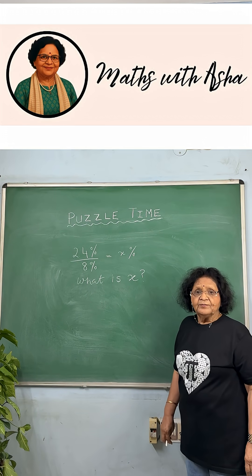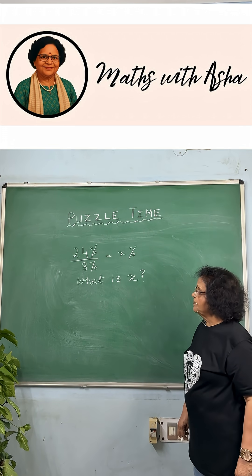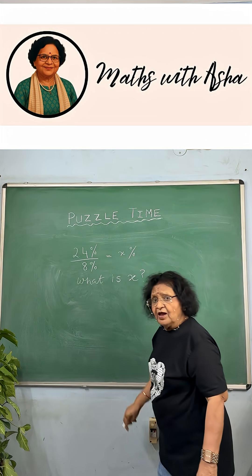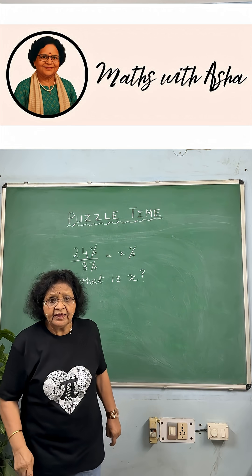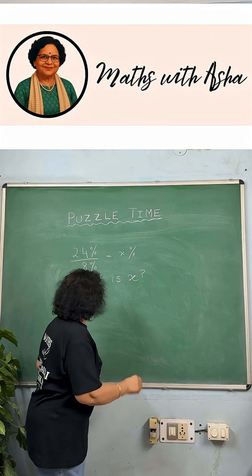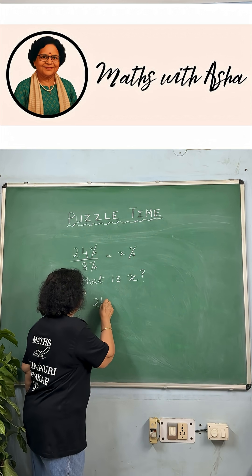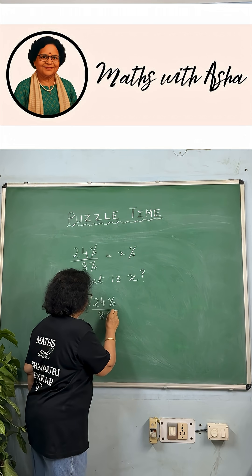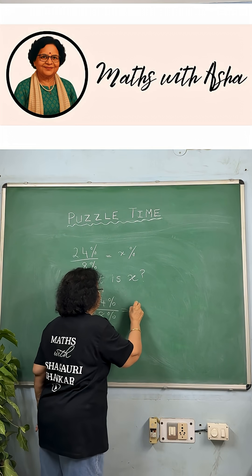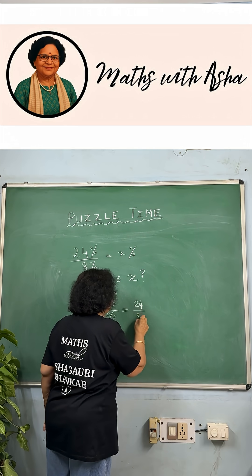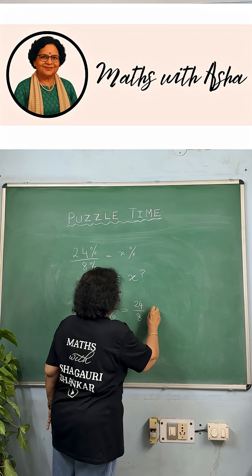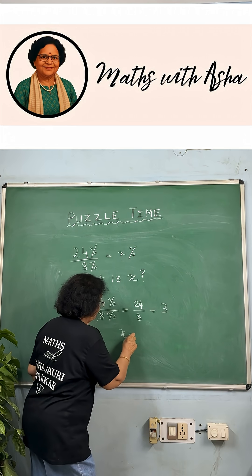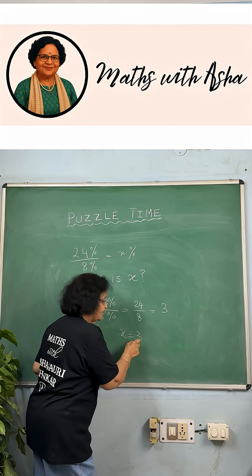Very interesting puzzle on percentages. 24% over 8% is x%. So we have to find the value of x. 24% over 8% — we cancel out the percentages. So this is nothing but 24 by 8, which is 3. So x is 3, right?